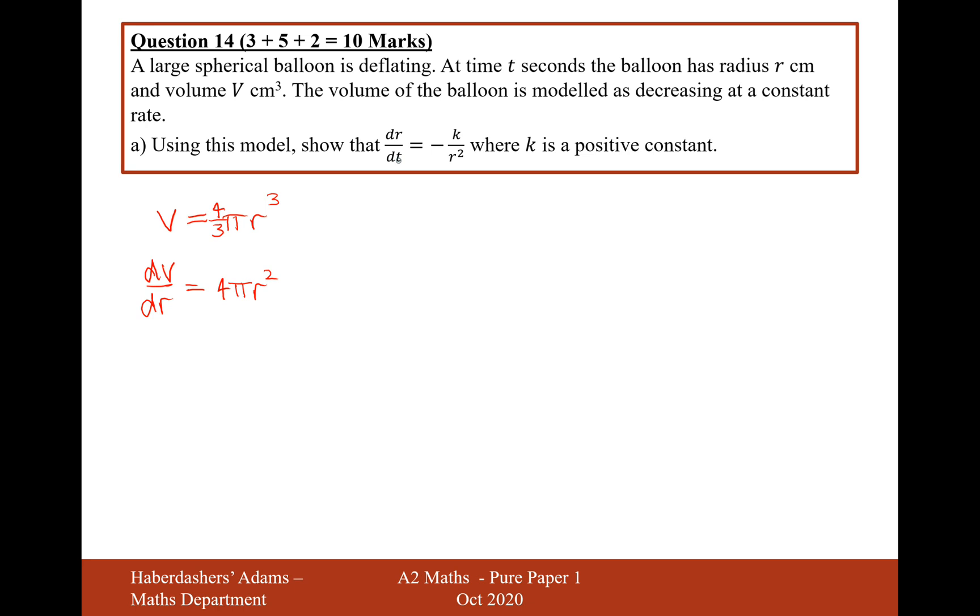Now, what we probably need to know is some relation to do with dV/dt. So if it's decreasing at a constant rate, and the balloon is modeled as decreasing at a constant rate, then the rate at which the volume is changing with relation to t is equal to minus k.